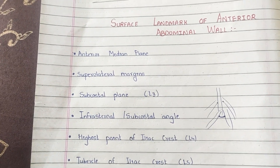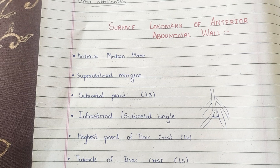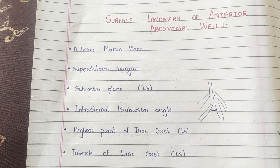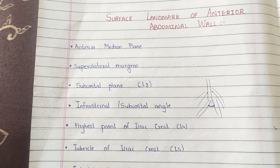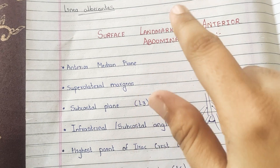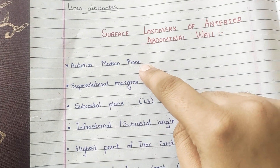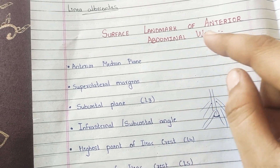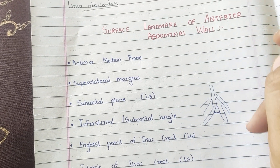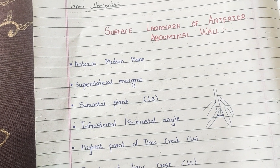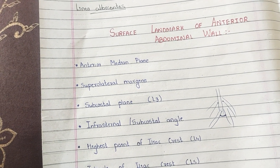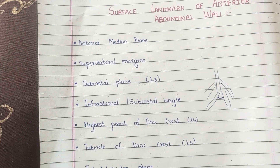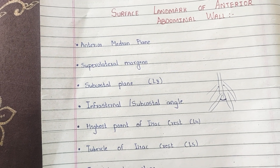Hello friends, let's learn today the surface landmarking of the anterior abdominal wall. The anterior median plane is the plane passing through the xiphoid process in front, which lies at the level of the ninth thoracic vertebra, below to the pubic tubercle, which lies at the level of the coccyx posteriorly. The plane of the abdominal wall becomes lower because it is less extended due to the presence of the thoracic cage above.